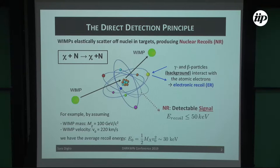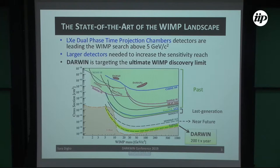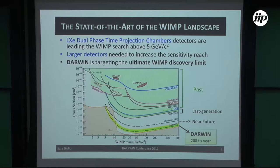One of the main backgrounds comes from electron recoils of gamma or beta particles interacting with the electrons of our nucleus. Let me briefly remind you of the state of the art in the WIMP landscape. You have the cross-section of the spin-independent interaction as a function of WIMP mass. The green region represents what has been excluded so far, and the last-generation liquid xenon dual-phase time projection chambers are currently leading the field above 50 GeV. Darwin aims at covering the full parameter space up to the neutrino floor.